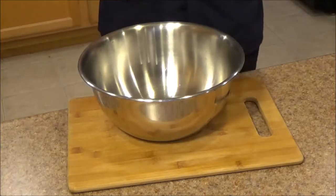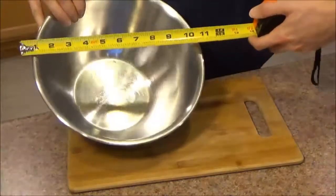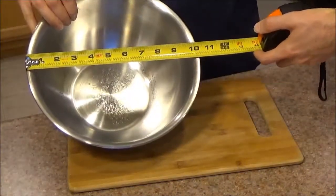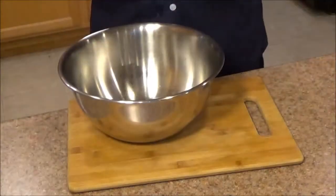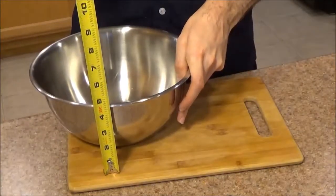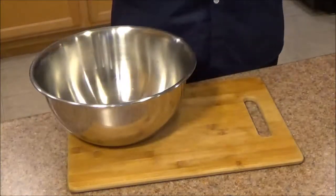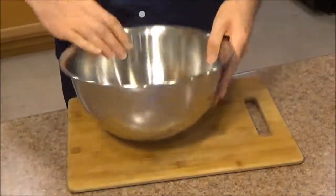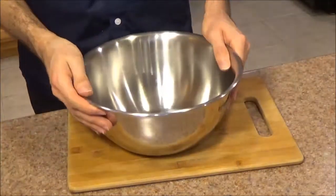So let's begin with some measurements. This mixing bowl measures 10 and 5/16 of an inch in diameter, it has a height of 4 and 1/2 inches, it has a brushed stainless steel finish on the inside, and a mirror finish on the outside.